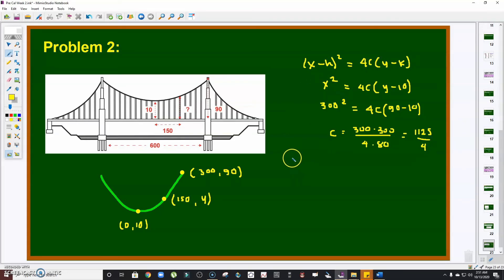Meaning to say, the equation of the parabola will be x² = 4 × (1,125/4) × (y - 10). Clearly, the 4s cancel out, so what will be left here is x² = 1,125(y - 10). This is the equation of the parabola.